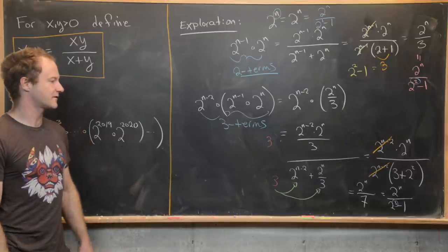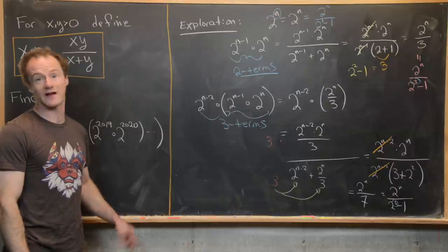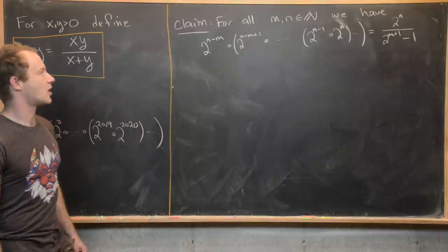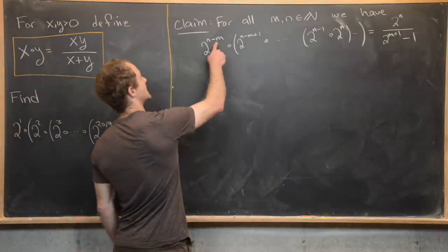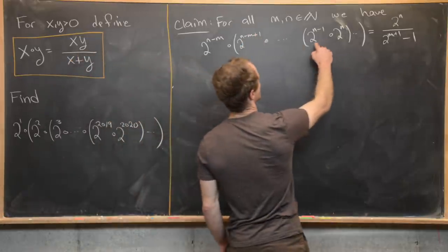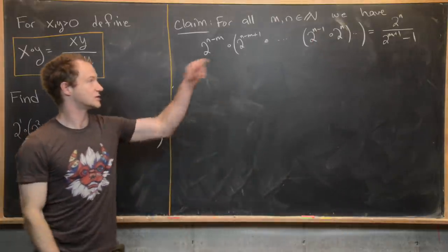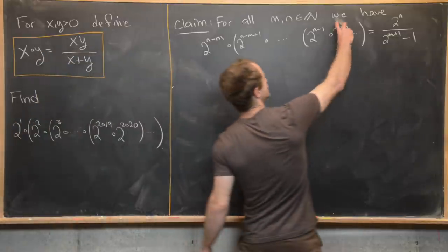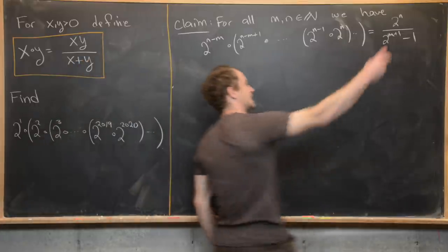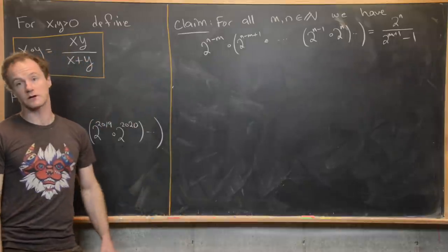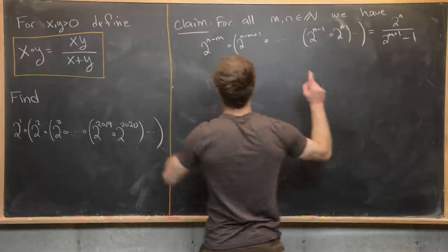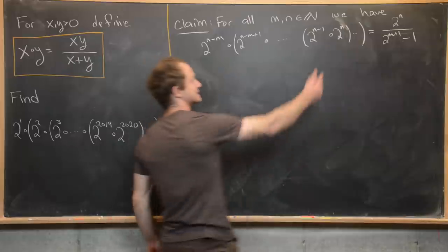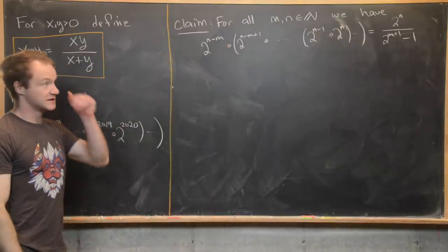Looking at the structure: with one term we get 2 to the n over 2 to the 1 minus 1; with two terms, 2 to the n over 2 squared minus 1; with three terms, 2 to the n over 2 cubed minus 1. So for all m and n natural numbers, we claim that 2 to the n minus m circle 2 to the n minus m plus 1 circle all the way up to 2 to the n equals 2 to the n divided by 2 to the m plus 1 minus 1. The exponent in the denominator equals the total number of terms, which is m plus 1.